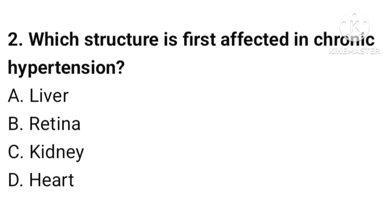Which structure is first affected in chronic hypertension? Correct option is B.